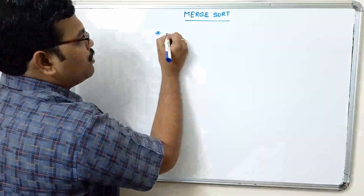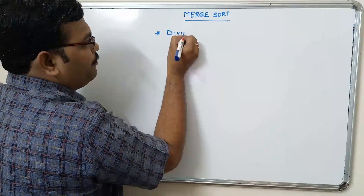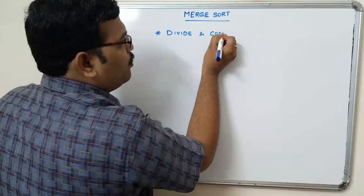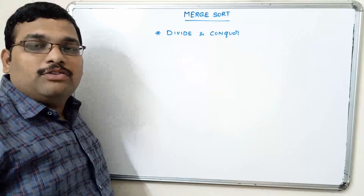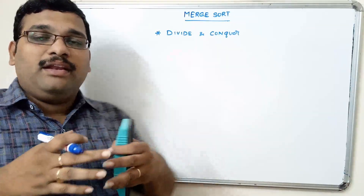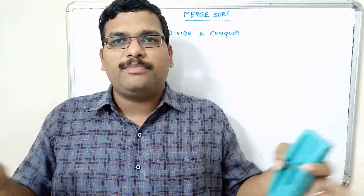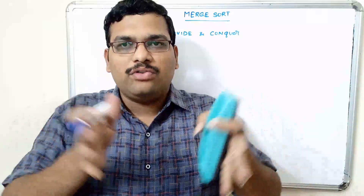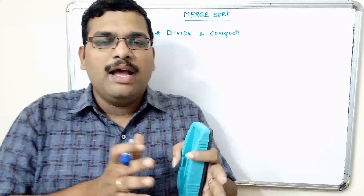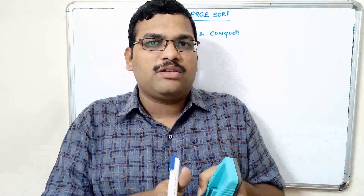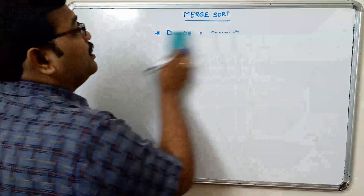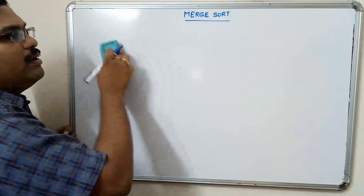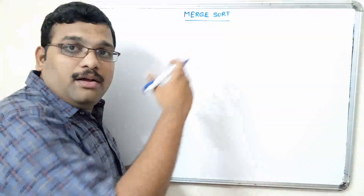Merge sort works with divide and conquer. Divide and conquer means in case of large problems we will divide that large problem into sub-problems. Those sub-problems will be solved, and then all the solutions of sub-problems will be combined to get the actual solution. That is the process of divide and conquer.